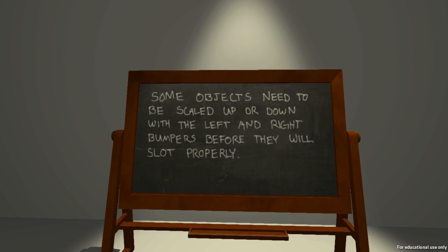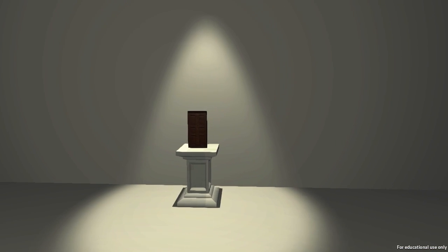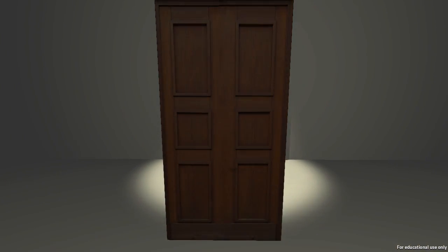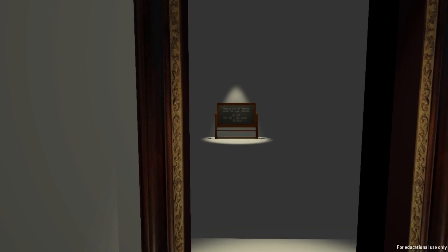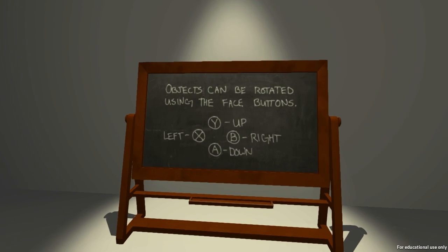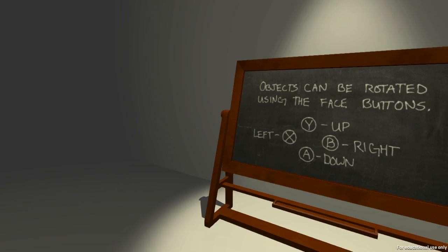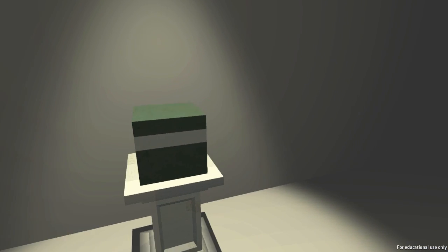Some objects need to be scaled up or down with left or right bumpers before they will slot properly — in this case, a door. We will try and scale it to fit this door frame. Right bumper makes it smaller, left bumper makes it larger. Objects can also be rotated by using the face buttons. We've got a cube here with a line on it, so we're going to grab that and bring it over to a larger cube with a matching line, orient it with the face buttons — and flip it. And we're good.